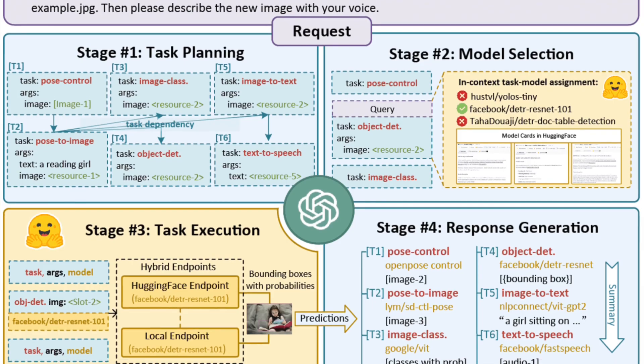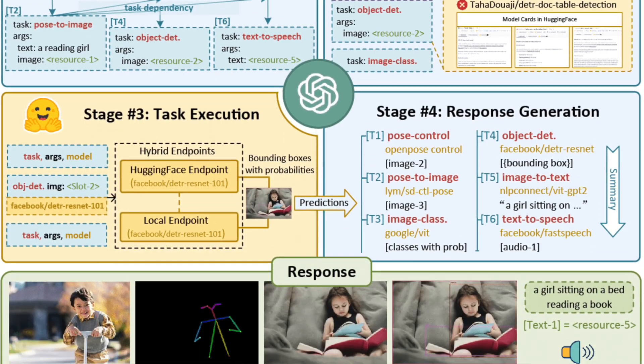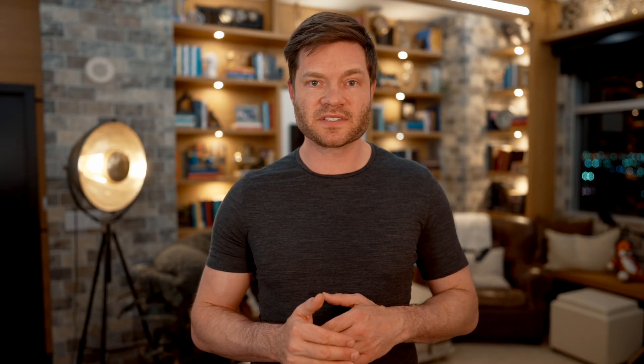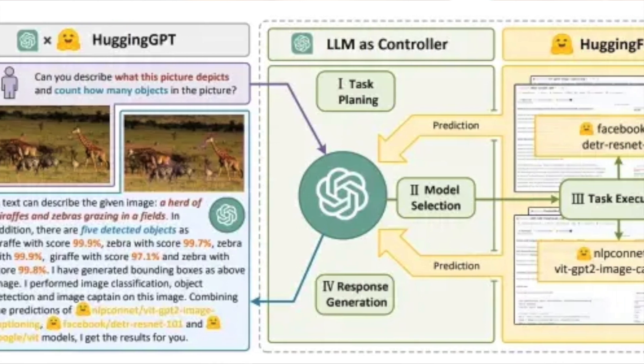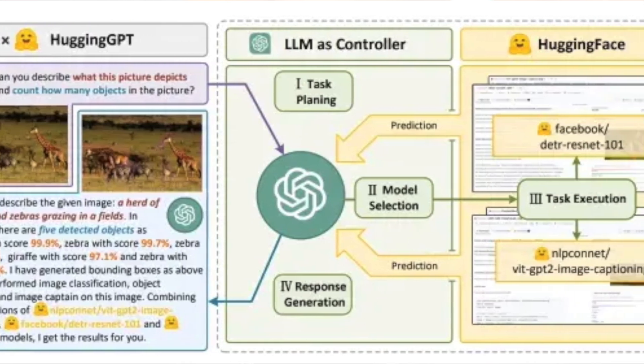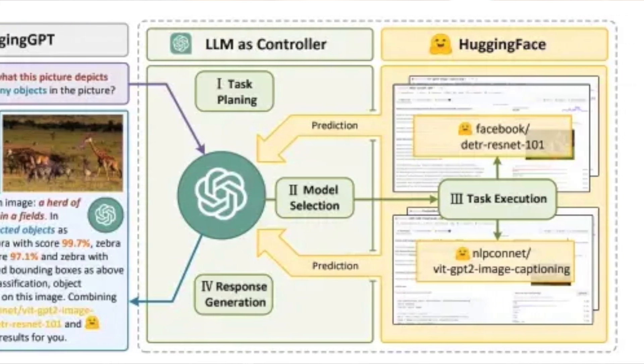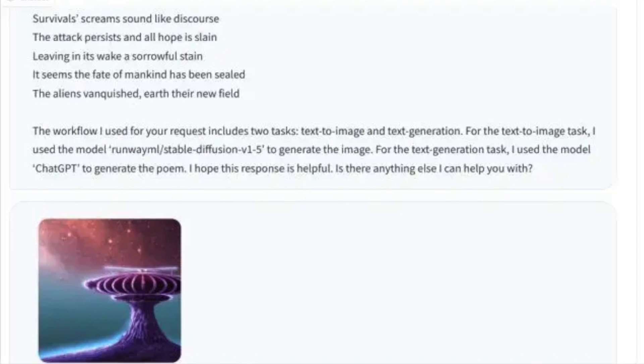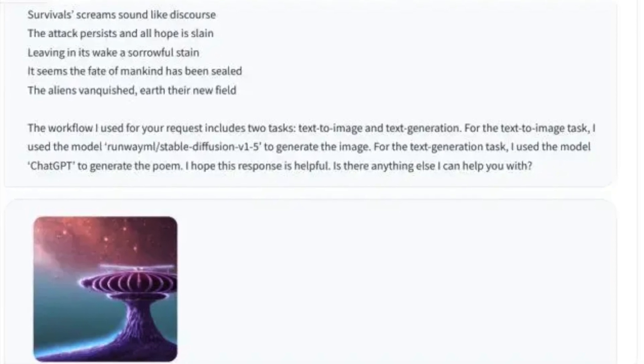There are four main steps that make Jarvis work: task planning, model selection, task execution, and response generation. First it plans the task — takes the goal and breaks it into individual steps. Then it takes each task and applies it to the right fine-tuned AI agent that can complete it. After that, it runs the code and executes the task, and finally takes the result and summarizes it, makes an image, or produces whatever output you want.